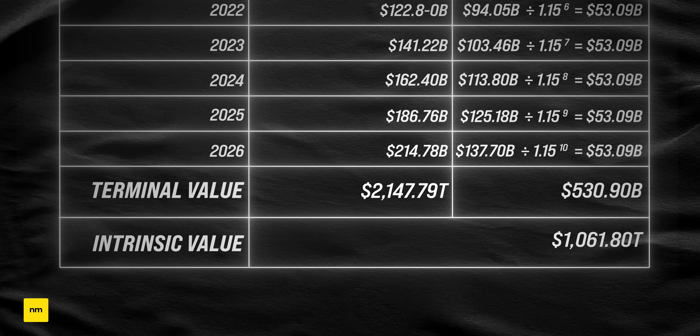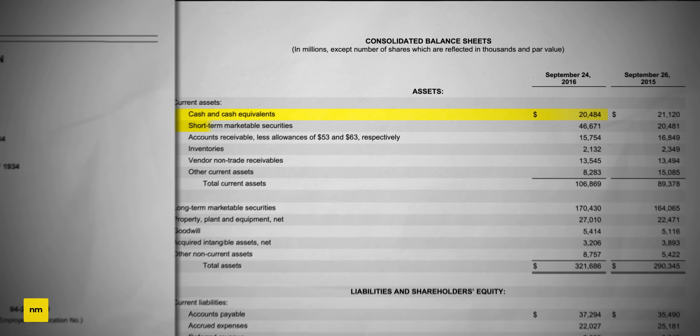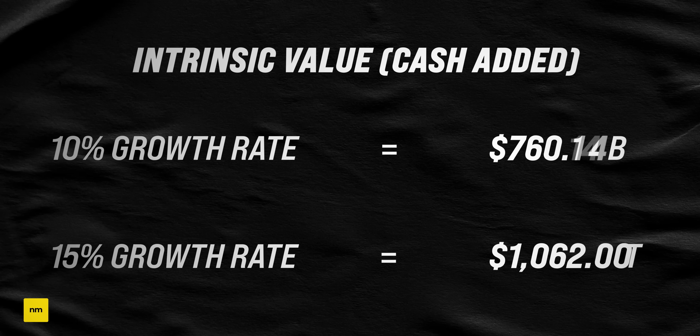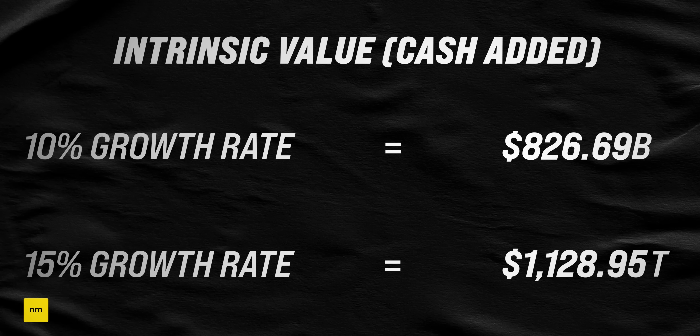So doing this method back in 2016, Apple's intrinsic value was somewhere between $759.53 billion and $1.062 trillion. But there are two more things to do. Think about this: if you were buying a house you thought was worth $500,000 but knew there was $100,000 buried in the backyard, you'd obviously be willing to pay up to $600,000. It's the exact same thing with businesses — they have a treasure chest of cash that you get when you buy them. Looking at Apple's 2016 10-K, they had $20.484 billion in cash and $46.671 billion in short-term marketable securities, so adding that $67 billion brings the intrinsic value range to between roughly $826.7 billion and $1.129 trillion.